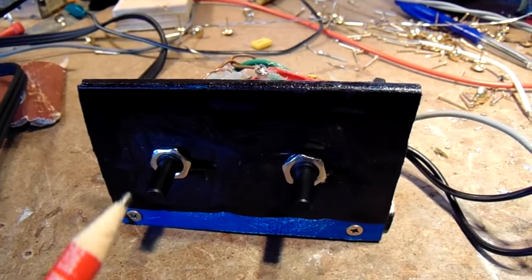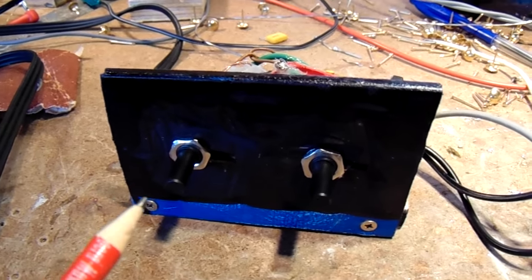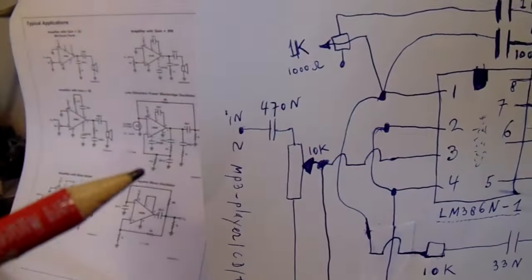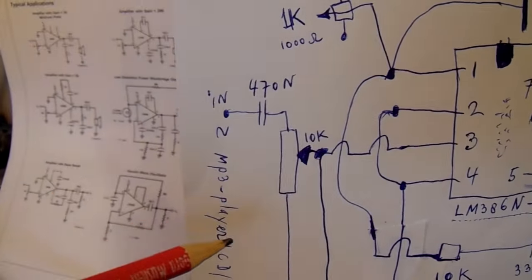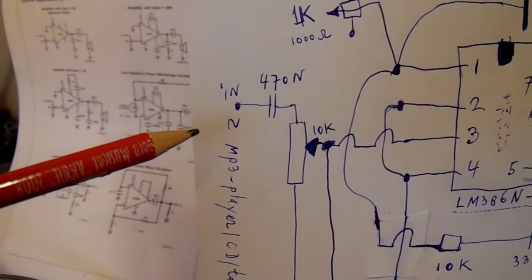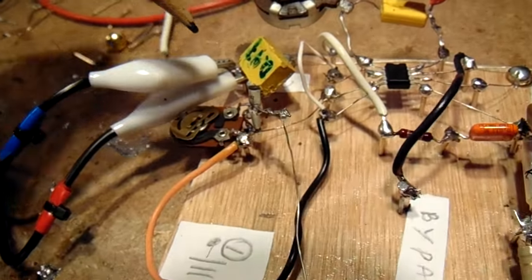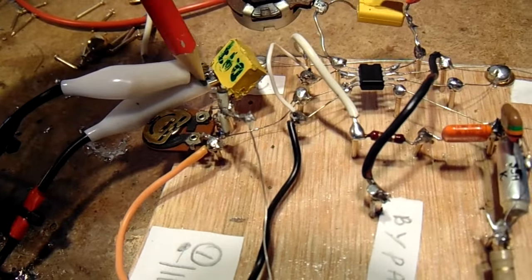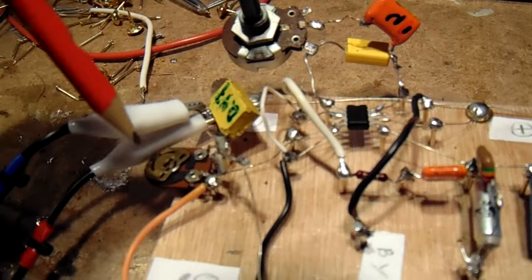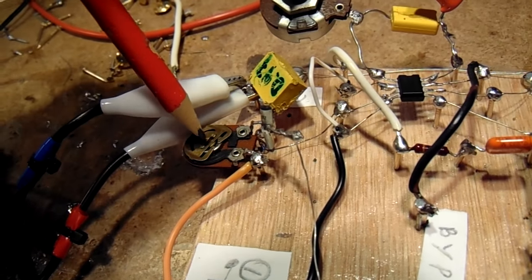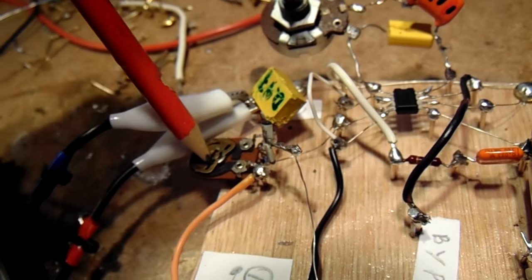So some more explanation. This is the input unit. In fact it's this circuit, but it's made two times because it's stereo. Here both channels are connected, left and right channel. Input potentiometer 10k to set the level.